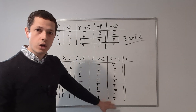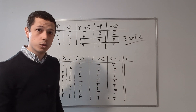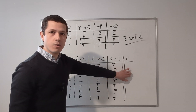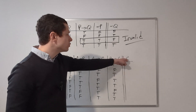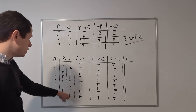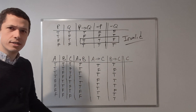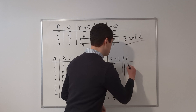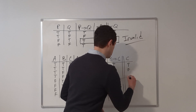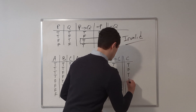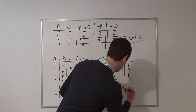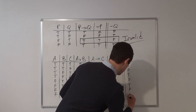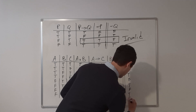We've calculated all the truth values for the premises. All that's left is the conclusion, which is literally just C, so we rewrite those truth values: C alternates true, false, true, false, true, false, true, false. Our entire truth table is now set up.